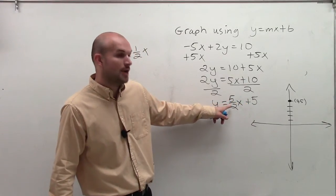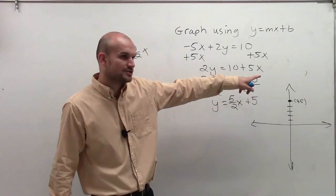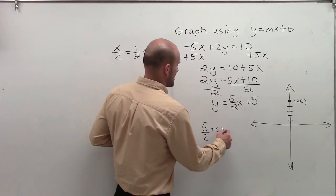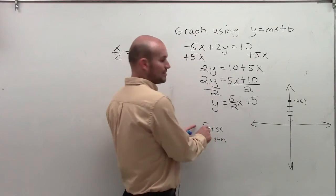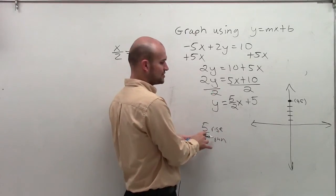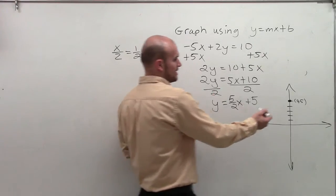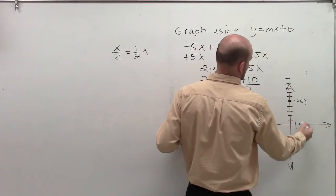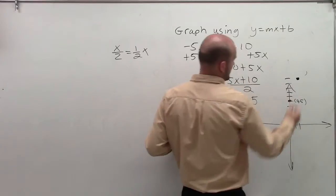Then your slope tells you to go up another 5 and to the right 2. Because 5 over 2, it's rise over run. Since your rise is positive, it tells you go up. Since your run is positive, it tells you go to the right. So I go 1, 2, 3, 4, 5, and 1, 2. So it's going to be roughly somewhere right around there.